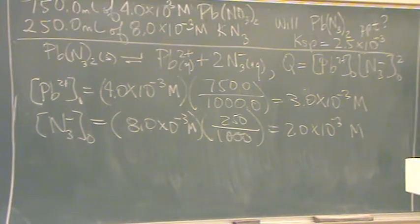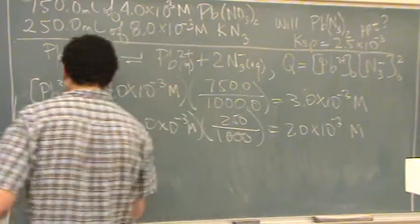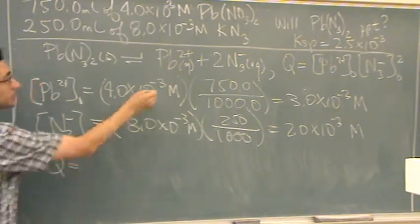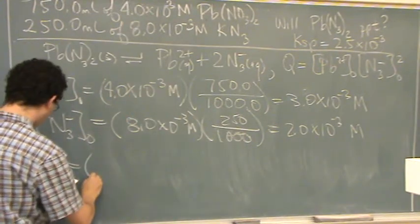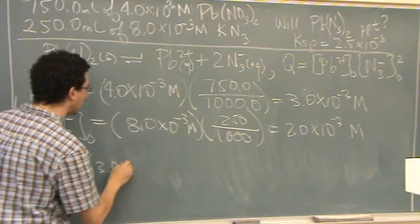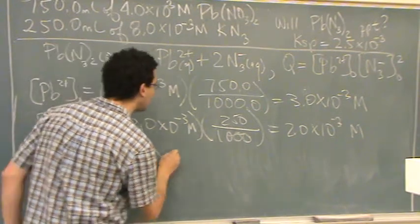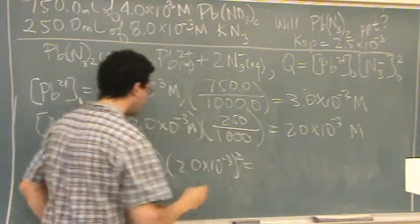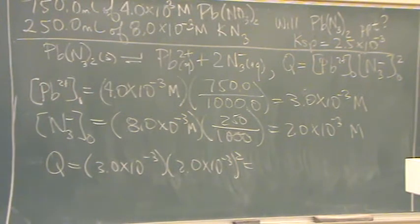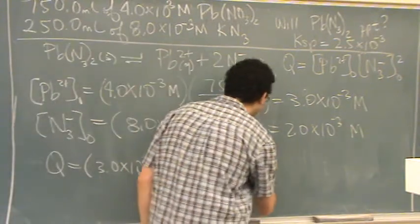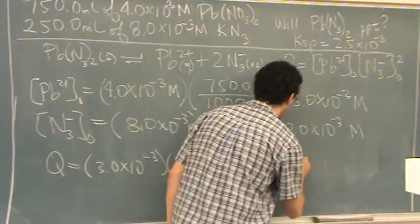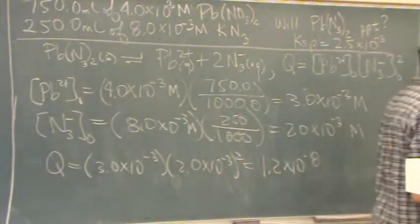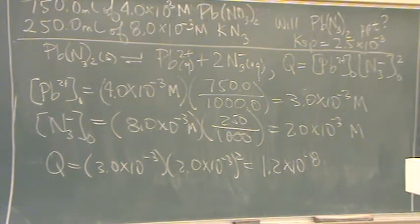So there's both concentrations, just put them in Q. The equation for Q is right up above, so that's 3.0 times 10 to the minus 3 times 2.0 times 10 to the minus 3 squared. Now you have Q, you compare it to K. Is it smaller or larger than K?